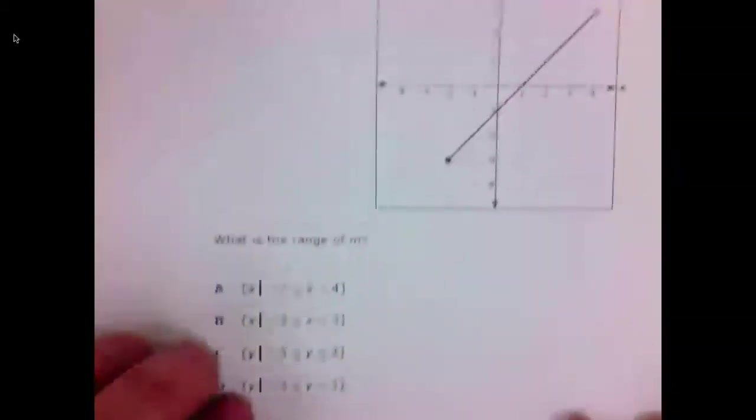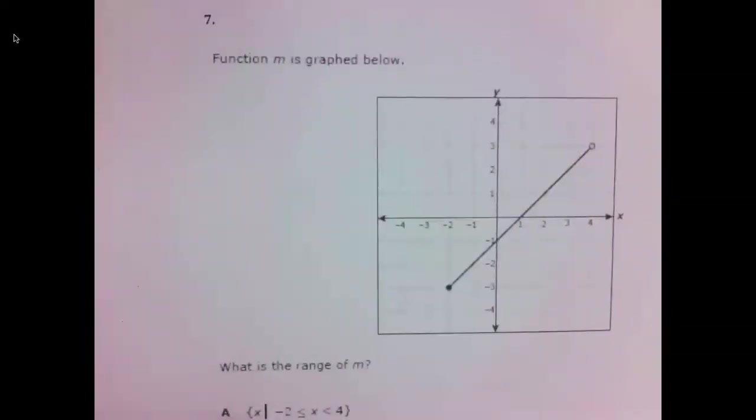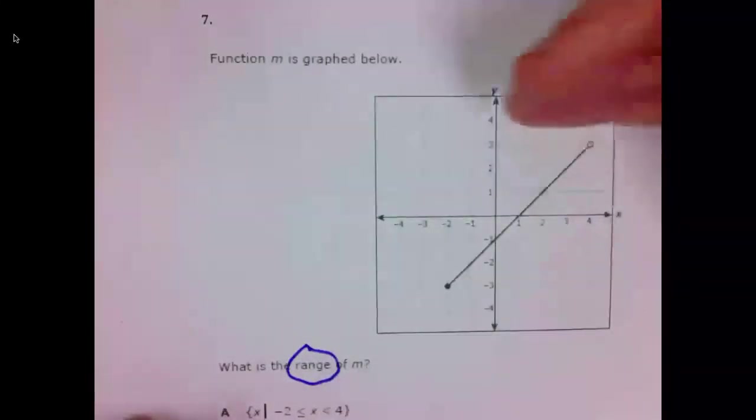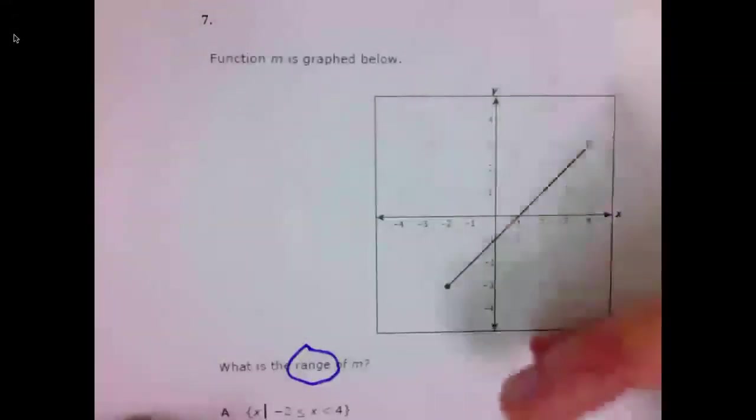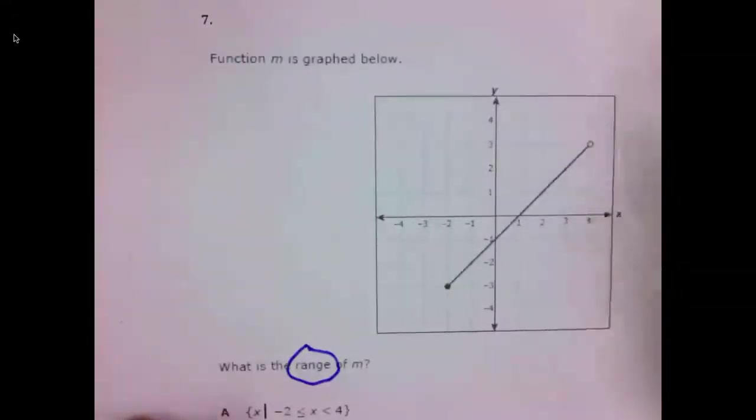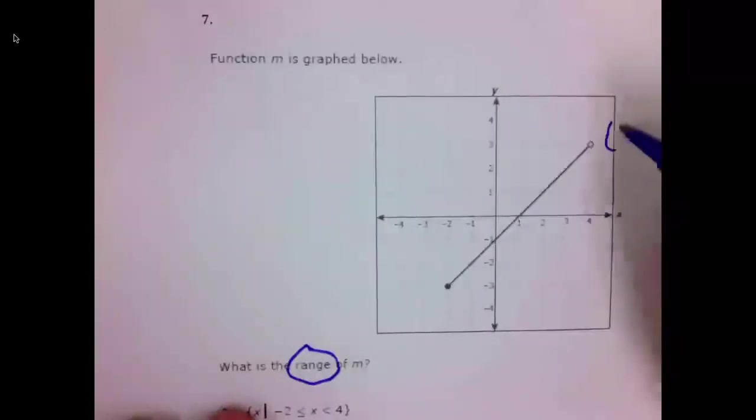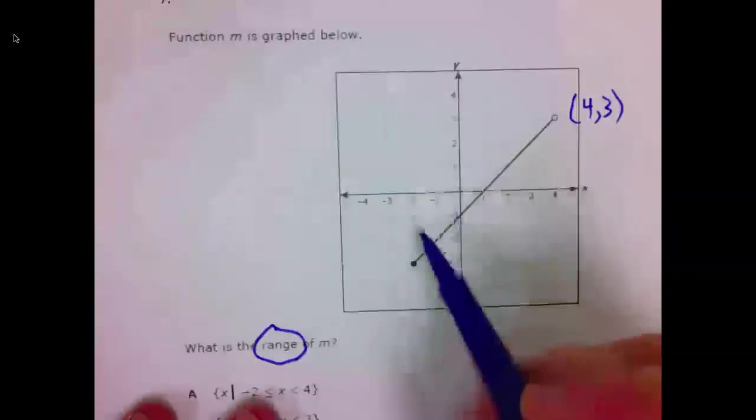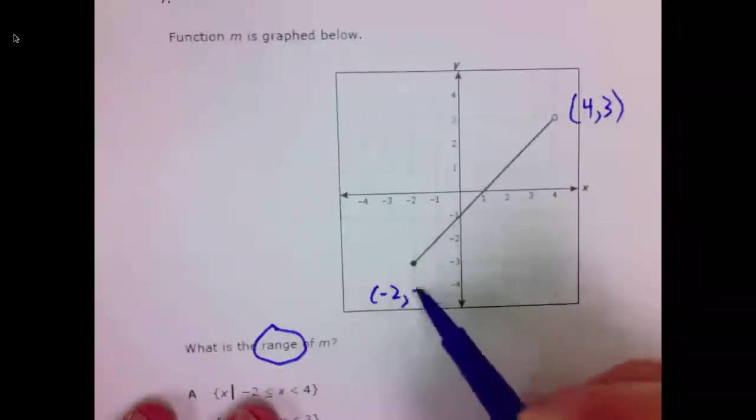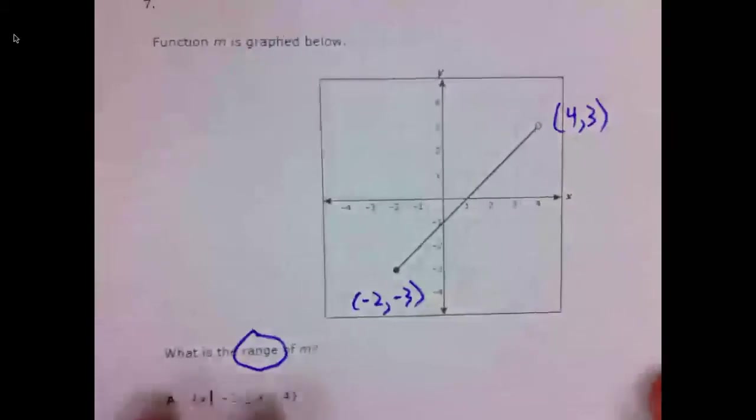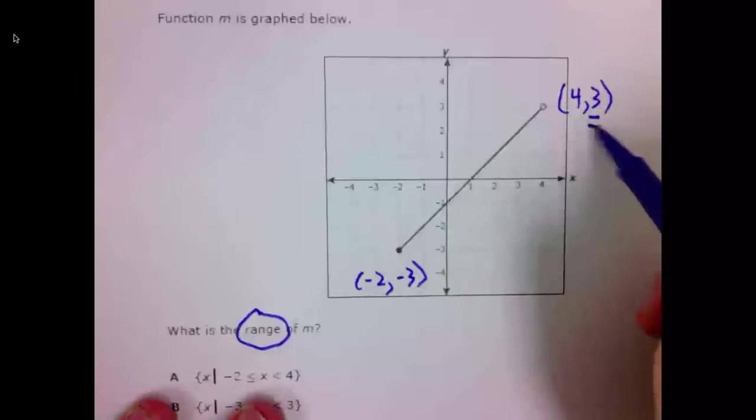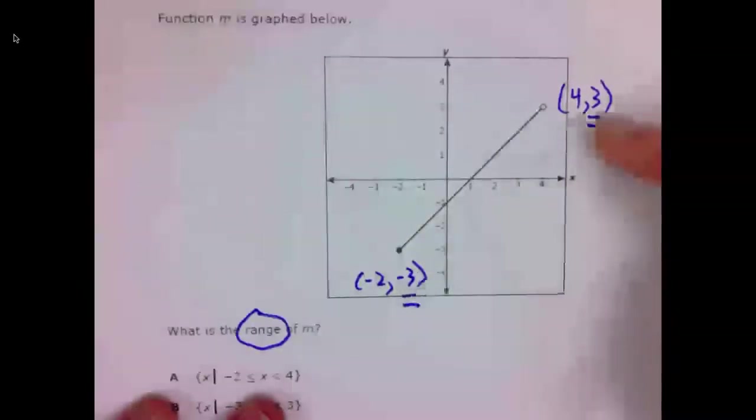Number seven. We're looking for the range. Know that the range are the Y values. So we want to consider the vertical maximum and the vertical minimum. This point here is 4, 3. The point down here at the bottom is negative 2, negative 3. And we're considering the range. Those are the Ys. So our range is from 3 to negative 3, from negative 3 to 3.